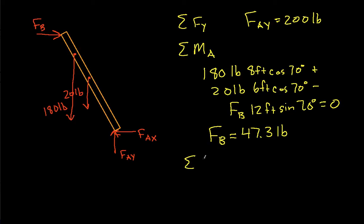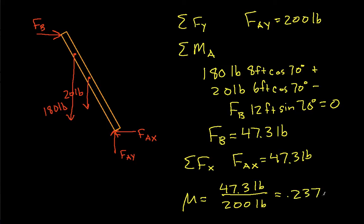Now the summation of forces in the x direction tells us that FB and FAX are equal, so FAX is equal to 47.3 pounds. The coefficient of friction that makes this work would be FAX, which is 47.3 pounds, over FY, which is 200 pounds, which is 0.237 to three significant figures.